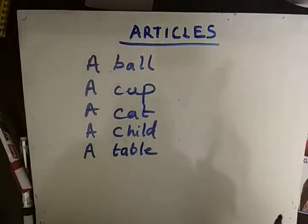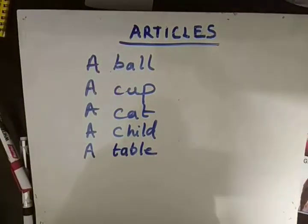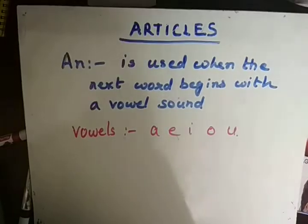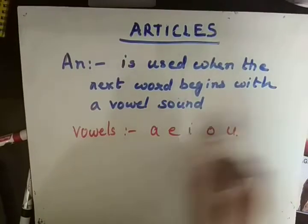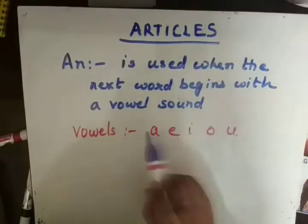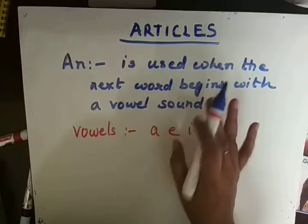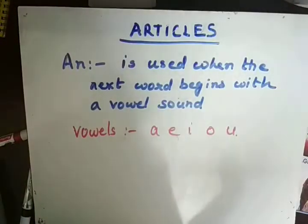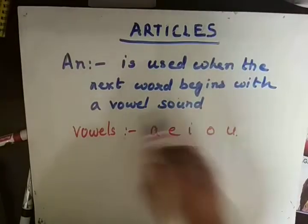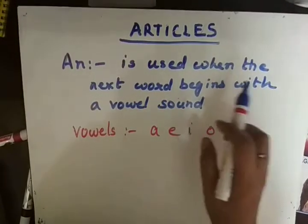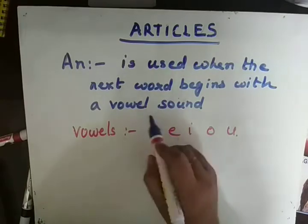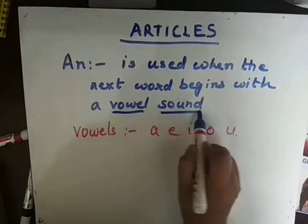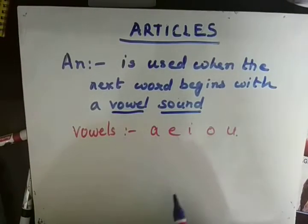Now let's see the article AN. AN is used when the next word begins with a vowel sound. We use AN when the next word — meaning the word that comes after — starts with a vowel sound. So what are vowels? A, E, I, O, U — these are vowels.